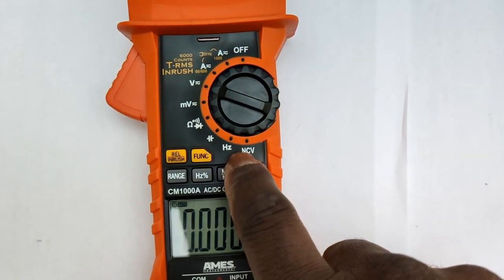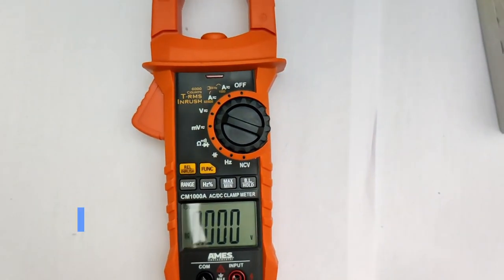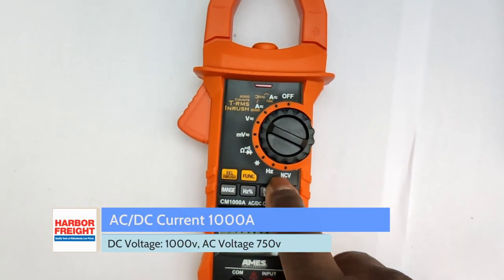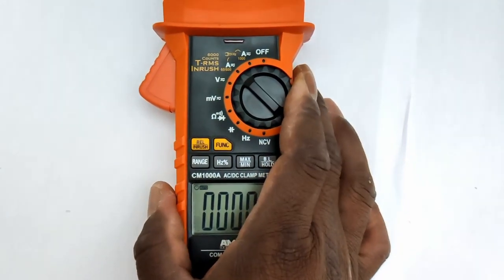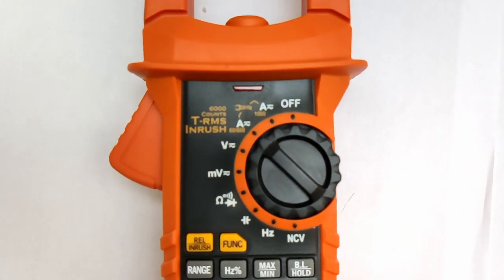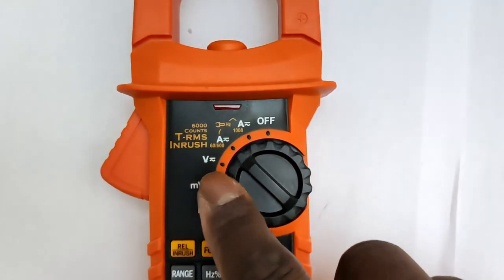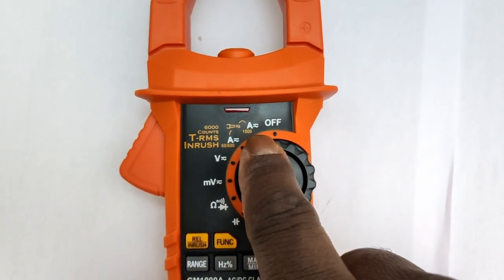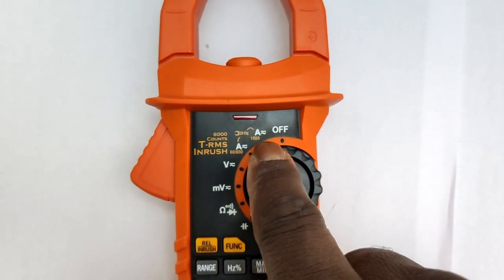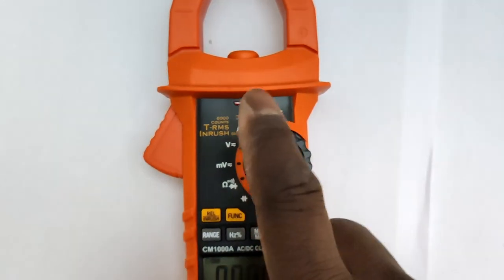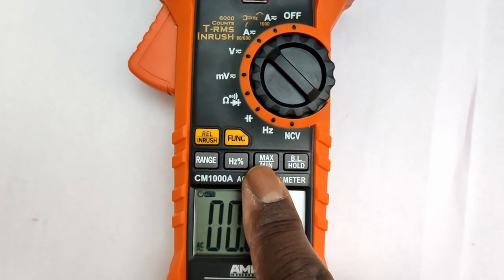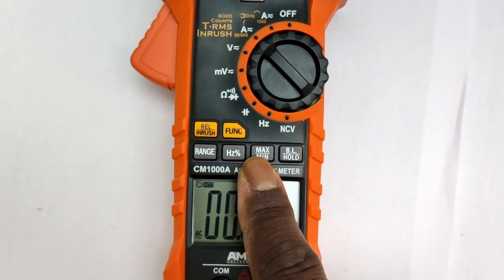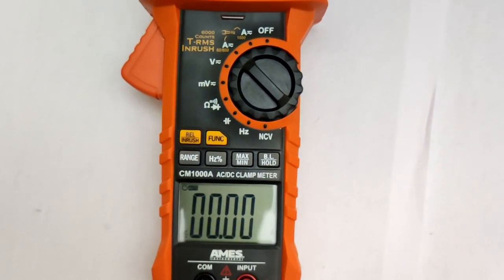In case you guys are wondering what all it can do, it does frequency, it does near contact voltage. But the functions we're going to be using it for are amperes. You got an auto mode that can measure 600 amperes, and then you got a high amper mode that measures anything up to 1,000 amps. I'm going to put it on auto, and then use the max min feature to let us know what our maximum current draw is.